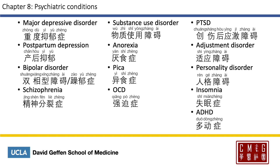Major depressive disorder is 重度抑郁症. Postpartum depression is 产后抑郁. Bipolar disorder is 双向性障碍, or more commonly called 躁郁症 — 躁 meaning 狂躁, and 郁 of course is 抑郁. Schizophrenia is 精神分裂症. Substance use disorder is 物质使用障碍. Anorexia is 厌食症, and pica is 异食症 — 厌 meaning to dislike, and 异 meaning different or peculiar. Obsessive compulsive disorder is 强迫症.